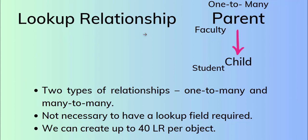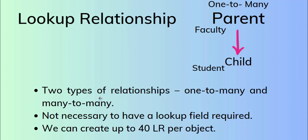Here we will see the overview of the lookup relationship. The lookup relationship has two types: one-to-many and many-to-many. For example, faculty on the parent side and student on the child side — one faculty has many students. In a lookup relationship, it is not necessary for the lookup field to be required, meaning without the parent the child can exist. We can create up to 40 lookup relationships per object.